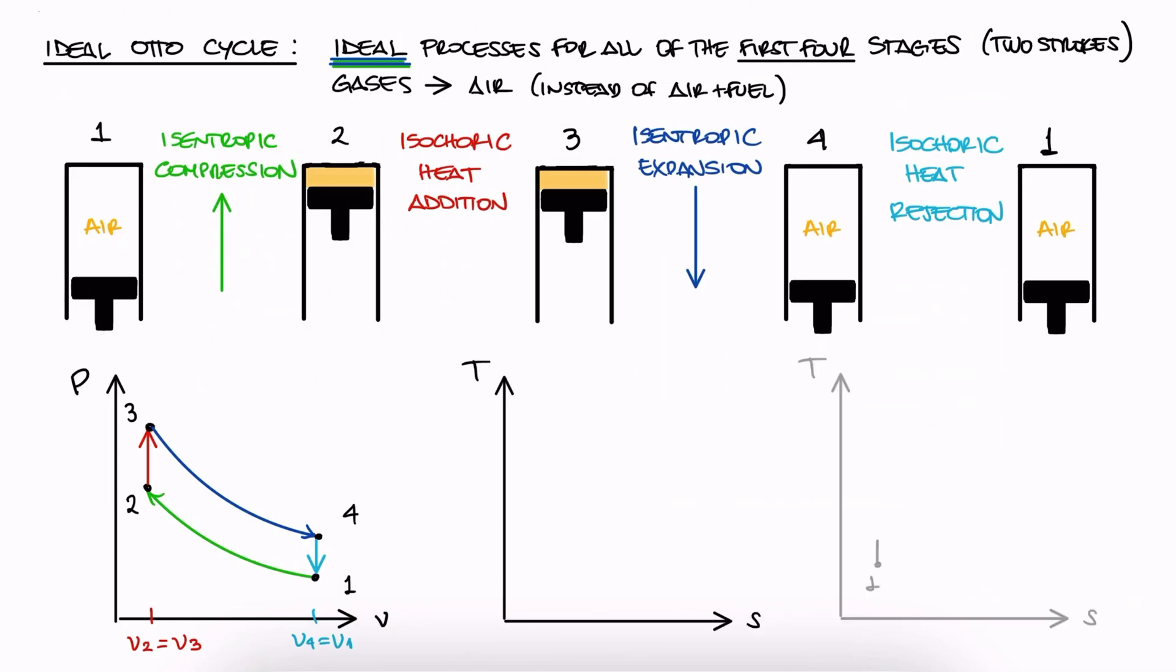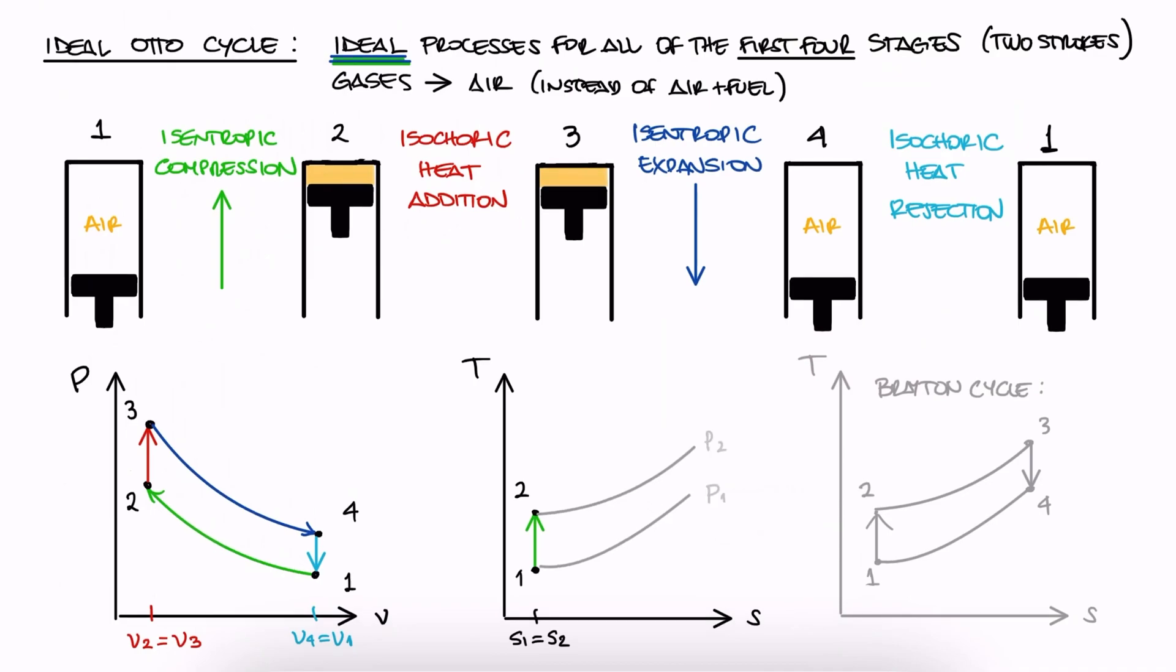On a TS diagram, we're going to see something very similar to what we see in a Brayton cycle. From 1 to 2, we have isentropic compression which raises the pressure, from 2 to 3 isochoric heat addition as opposed to the isobaric process in a Brayton cycle, which means a different slope here, from 3 to 4 isentropic expansion, and from 4 to 1 isochoric heat rejection, again as opposed to isobaric in a Brayton cycle.